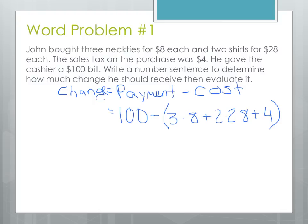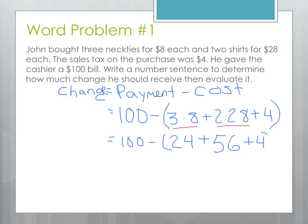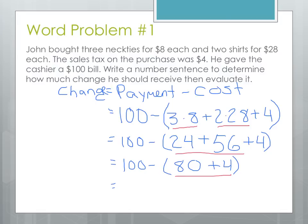So this is going to be our number sentence for the amount of change that he's going to receive. We're going to start working in the parentheses. The first thing that we're going to do are our multiplication steps, and I'm going to do them both at once. So we still have 100 minus — 3 times 8 is going to be 24 — plus 2 times 28, that's going to be 56, plus the 4 that we haven't used. Working in the parentheses, we're going to do that first addition. So we have 100 minus — 24 plus 56 is going to be 80 — plus the $4 in tax.